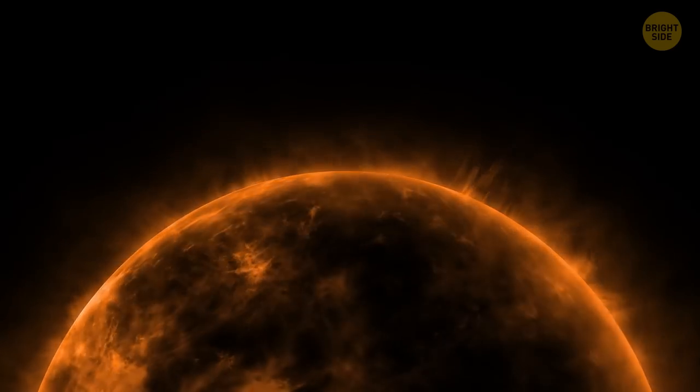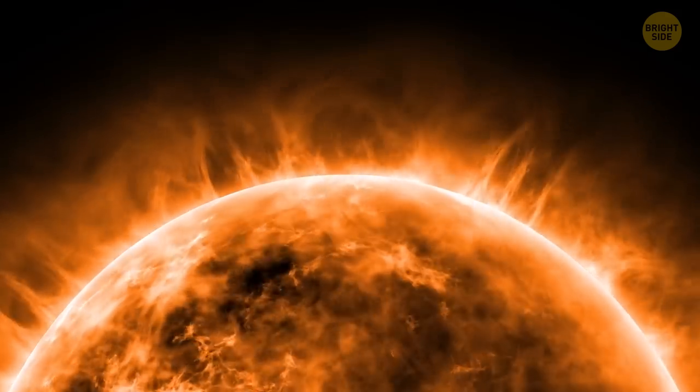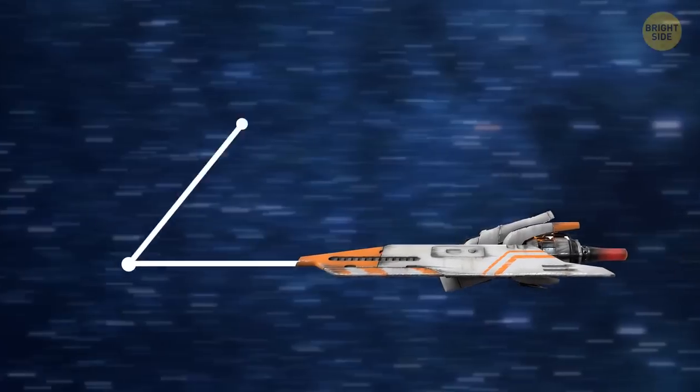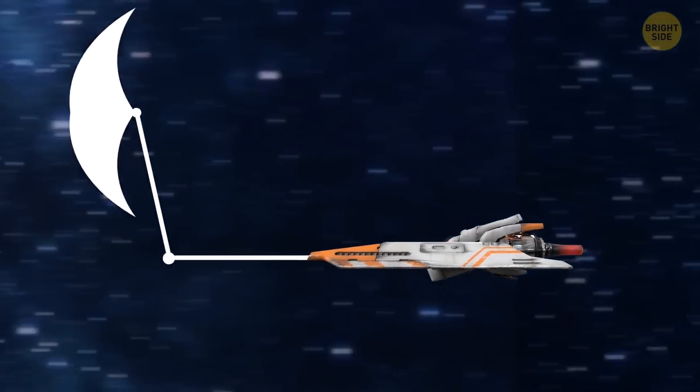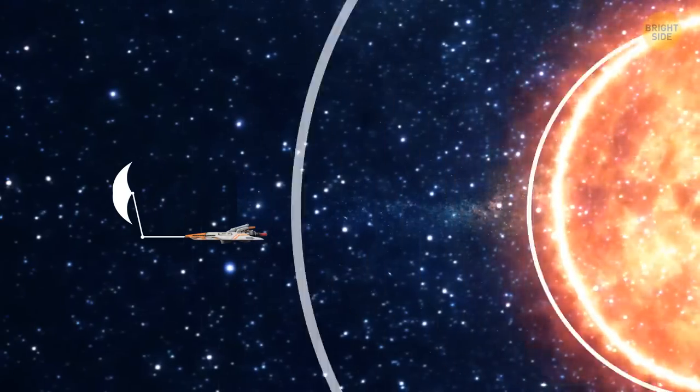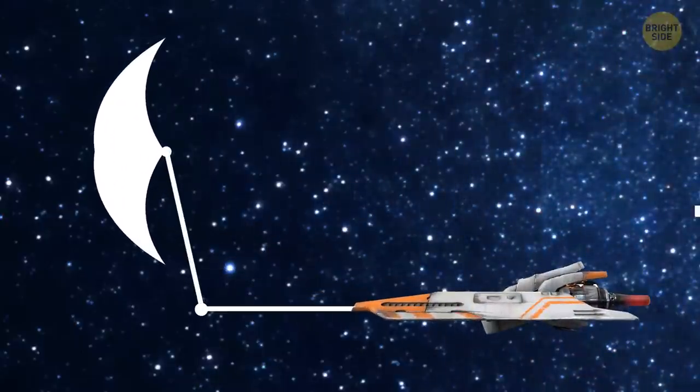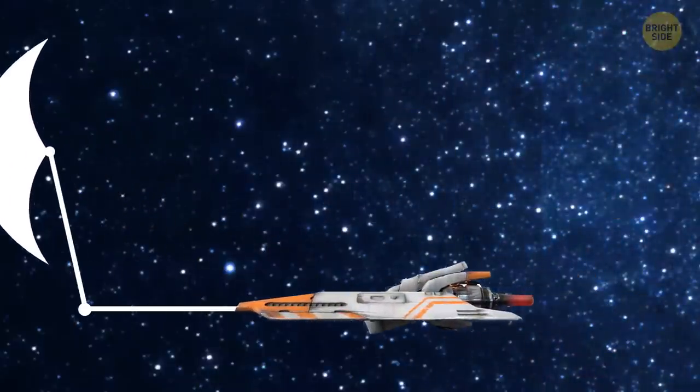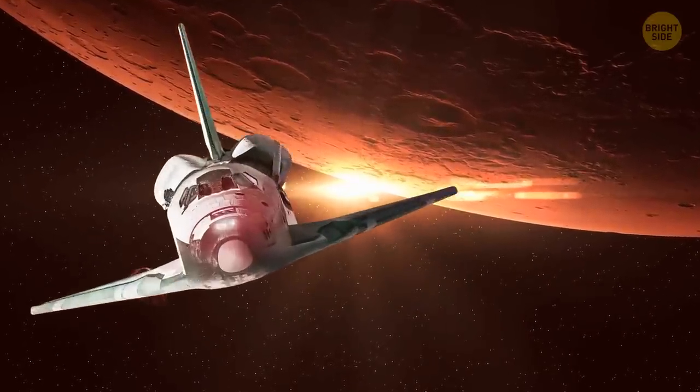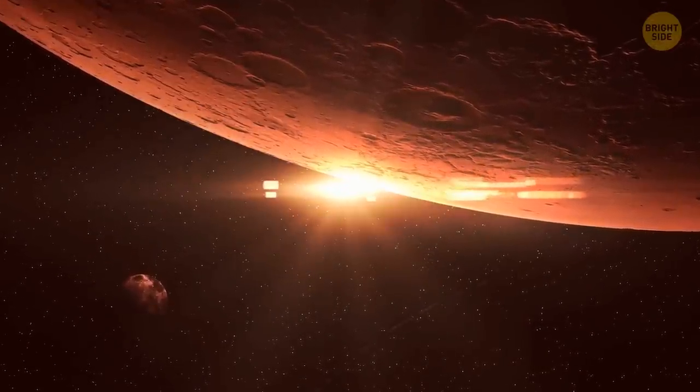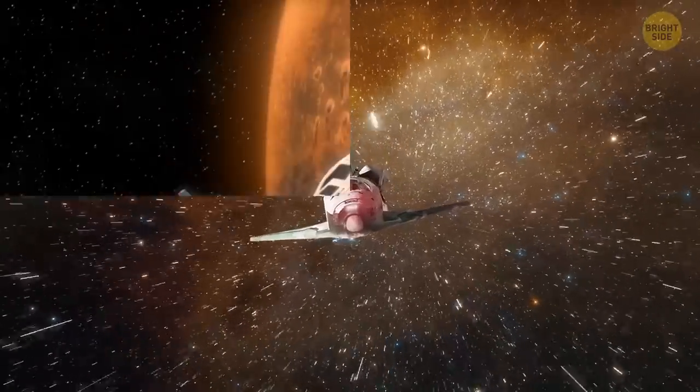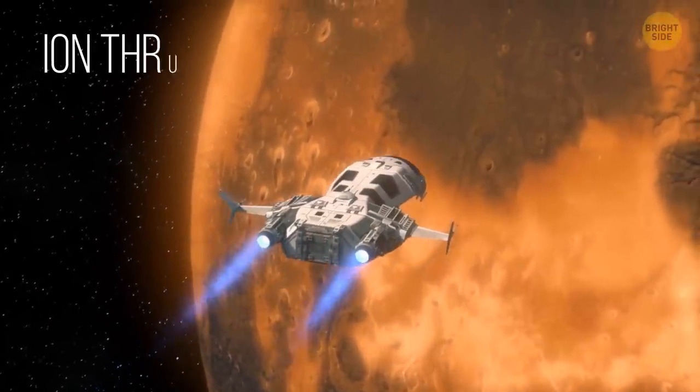But this sail technology can be used in space even without a powerful laser. We can use the sun. If we create a sail the size of a soccer field and unfold it in space, it'll start catching the sun's rays. And since the surface of the sail is reflective, the rays will bounce off the sail. This will create thrust and propel the spacecraft. One disadvantage is that we can only use it inside the solar system. In cold interstellar space, the sail won't be able to catch the sun's rays or solar wind.